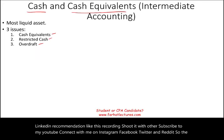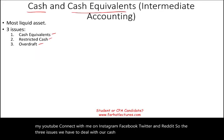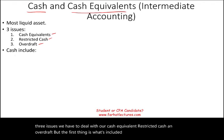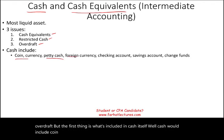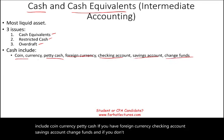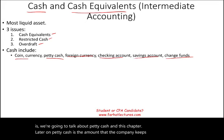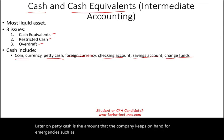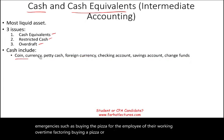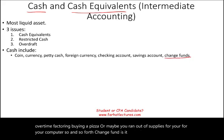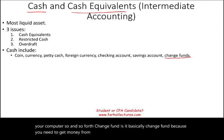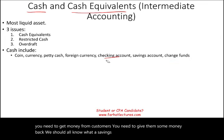The three issues we have to deal with are cash equivalents, restricted cash, and overdraft. But first, what's included in cash itself? Cash includes coin, currency, petty cash, foreign currency, checking accounts, savings accounts, and change funds. Petty cash is the amount a company keeps on hand for emergencies, such as buying pizza for employees working overtime or replacing office supplies. A change fund is cash kept to make change for customers.